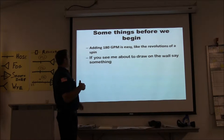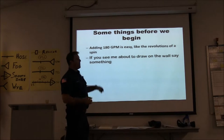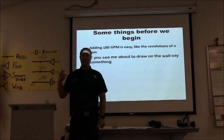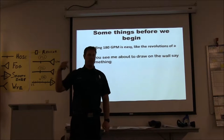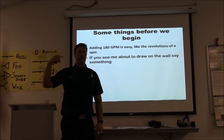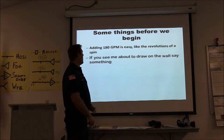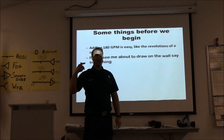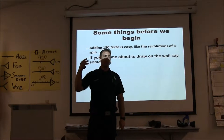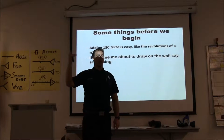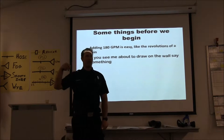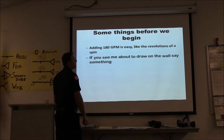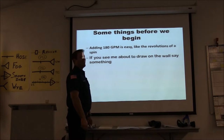Before we begin — as we used to add our GPM, it was easy because it was 150, 300, 450 — 150 GPM increments. 180 is also easy. It's just like the revolutions of a spin: 180, 360, 540, 720, 900, and so on. Think of it like snowboarding — the more you've done it, the better you get at it.